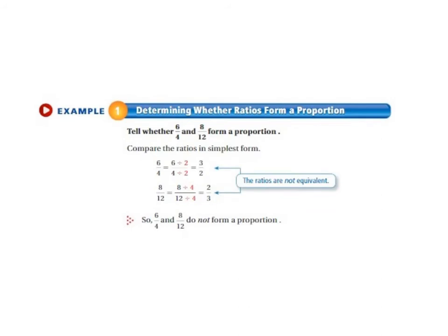Let's take a look at example 1. We're determining whether rates form a proportion. So really it's asking us whether or not the two ratios or the two fractions are equivalent. So this is something you have done before in the past. So it says compare the ratios in simplest form.